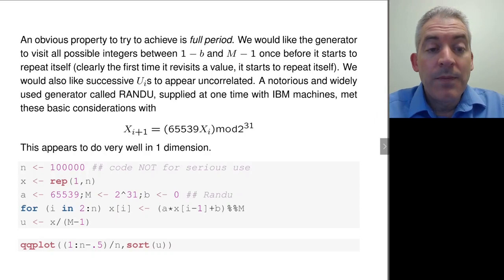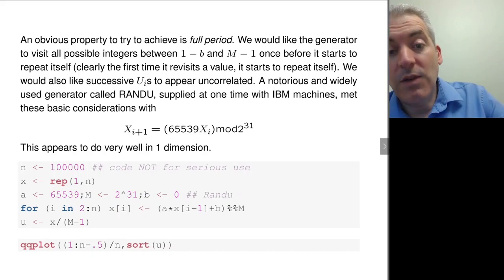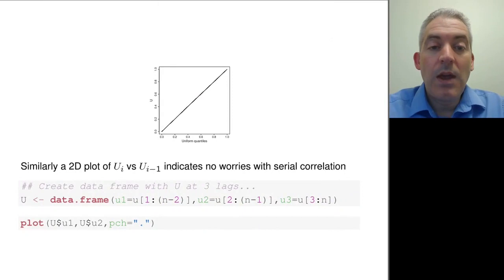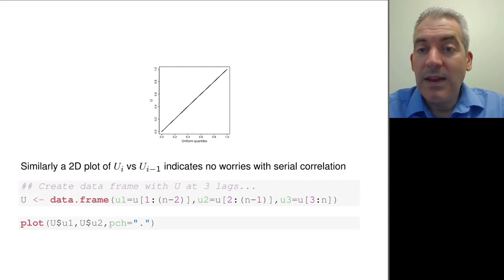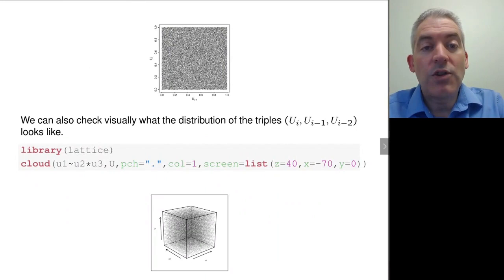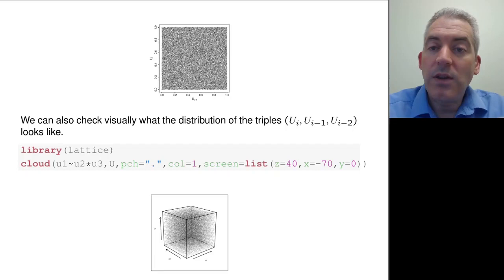If you implement that and rescale the x's by dividing by m-1 to get a sequence of random numbers u, you can then plot them. In particular, you could do a QQ plot against the uniform expectations and you see a nice straight line - so it looks uniform. You could also look at the plot of one value against the next, because you'd hope that they were independent or at least uncorrelated. That plot looks pretty good too - you get a nice uniform scattering of numbers on the unit square, which is exactly what you want to see.